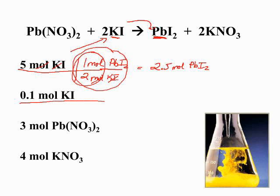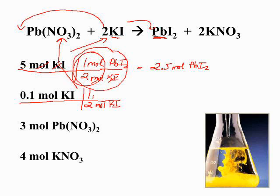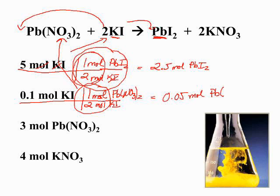If we started our reaction with 0.1 moles of potassium iodide, we could use that to solve for any other substance in the equation. Let's use it to solve for how much lead 2 nitrate we need to react with 0.1 moles of potassium iodide. Our mole ratio has 2 moles of potassium iodide on the bottom, and 1 mole of lead 2 nitrate on top, so we need 0.05 moles of lead 2 nitrate to react with 0.1 moles of potassium iodide.